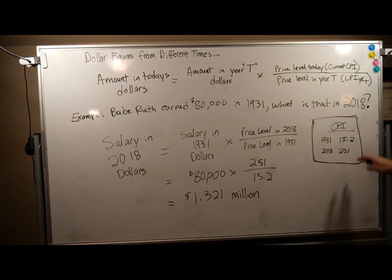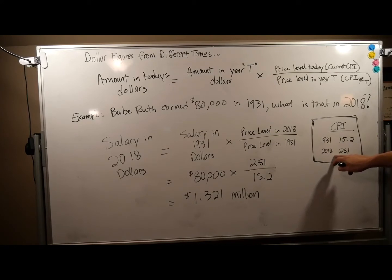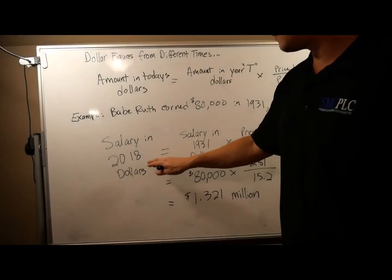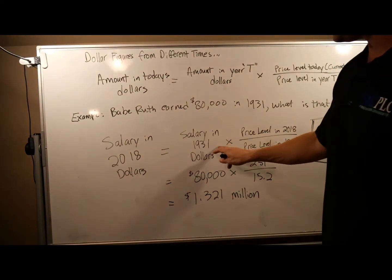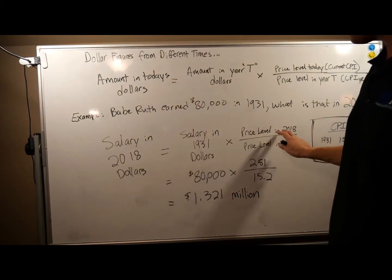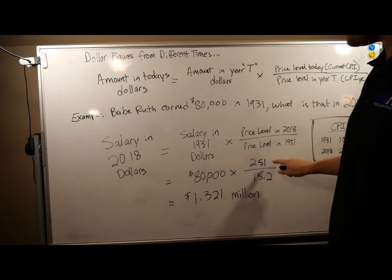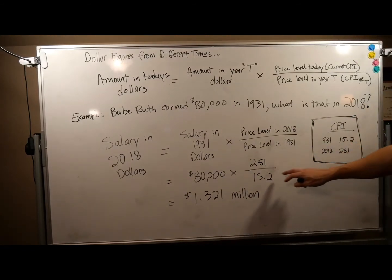From this data, below 100 is before the base year, and well above 100 is after the base year — they're just given here as fact. So we take Babe Ruth's salary in 2018 — that's our question. We take his salary in 1931, which is $80,000, and we multiply it by the price level in 2018, which is the CPI of 251, divided by the price level in 1931, which is 15.2.